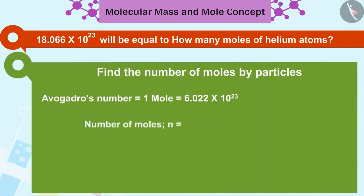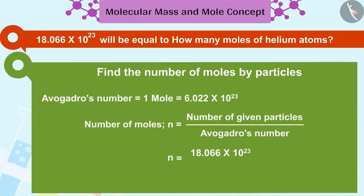To find the number of moles, we divide the number of given particles by Avogadro's number. In this way, 18.066 into 10 raised to 23 helium particles are equal to 3 moles.